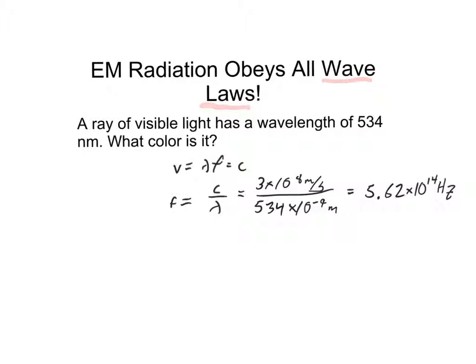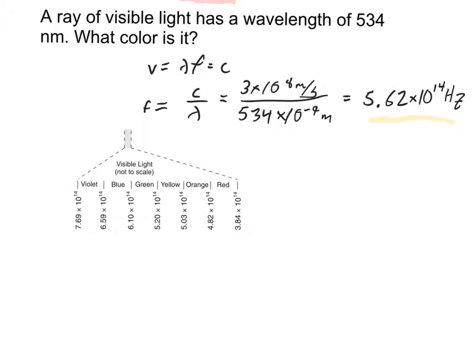Let me pull up my reference table. So, if I look at the ranges, if I want a frequency of 5.62 times 10 to the 14 hertz, that's in between 5.2 times 10 to the 14, and 6.1 times 10 to the 14, which means that the color of my light is green. So, that's the answer. We have a ray of green visible light.